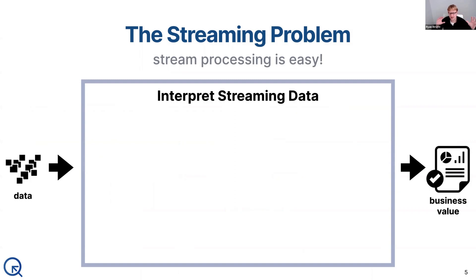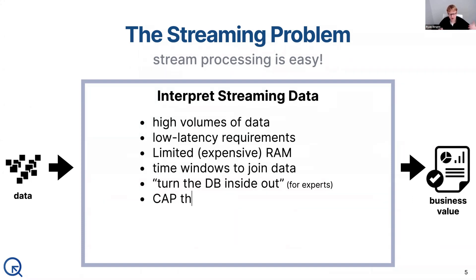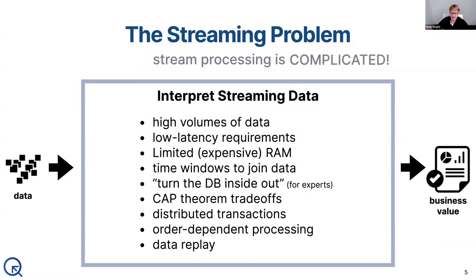That problem is usually a streaming data problem. Data comes in at high volume, we need to interpret it, hopefully as fast as possible. If we were to write out some of the requirements: we want it to handle high volumes of data, have really low latency requirements, deal with the fact that we are working on limited machines that have some fixed amount of RAM — so we can't necessarily do all the fun things we wish we could, or we need more complex systems to handle them.